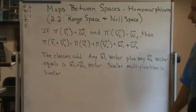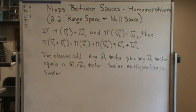One thing I want to say here, looking at what I wrote on the board, is that saying pi is a homomorphism is recognizing that if pi of vector v1 equals the vector w1 and pi of vector v2 equals the vector w2, then pi of the sum is going to equal the sum of the pi's.